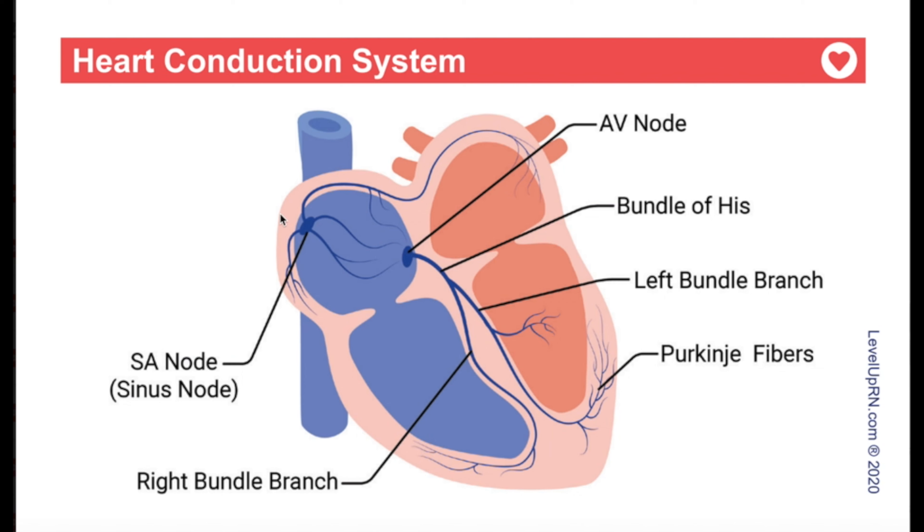Understanding this path of the conduction system is going to be important when we start talking about dysrhythmias, which we'll be covering later in this video playlist. Within the cardiac cycle, we have diastole and systole. During diastole, the ventricles and atria are relaxed and filling with blood. Then during systole, the ventricles and atria contract and eject that blood. About two-thirds of the time is spent in diastole and about one-third in systole.